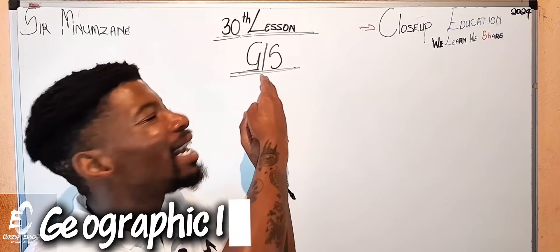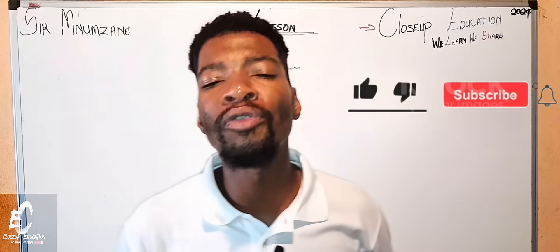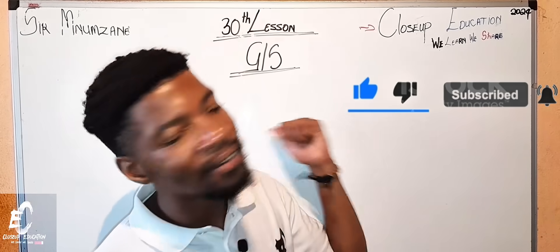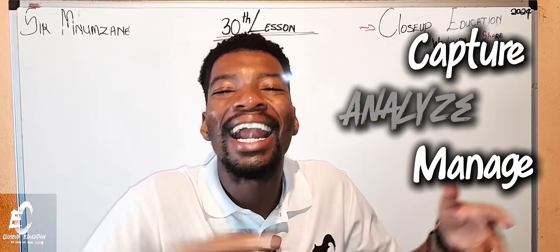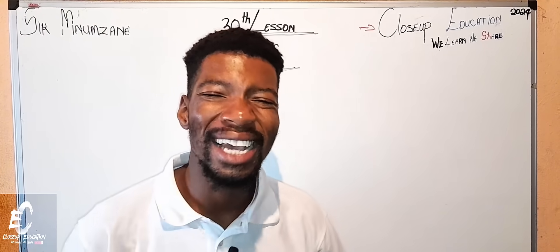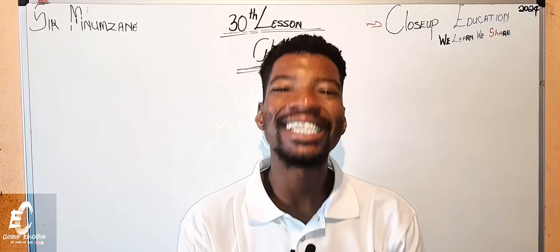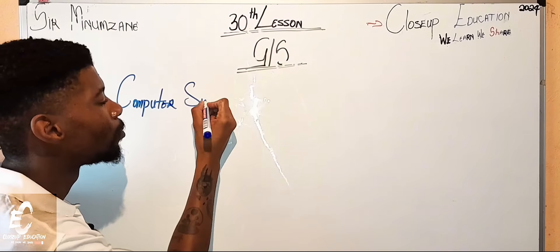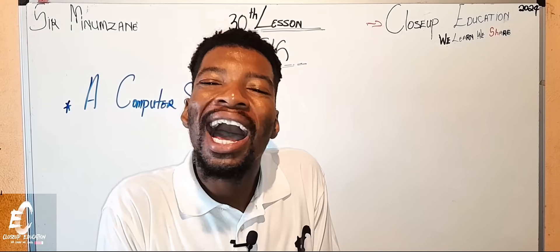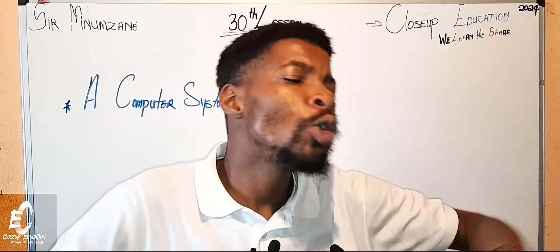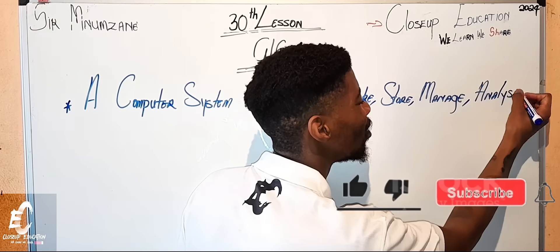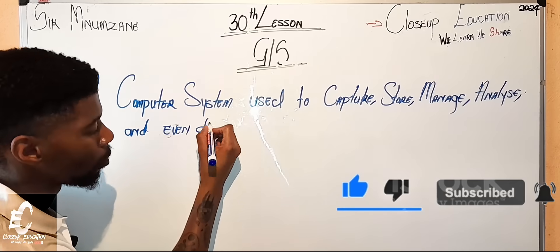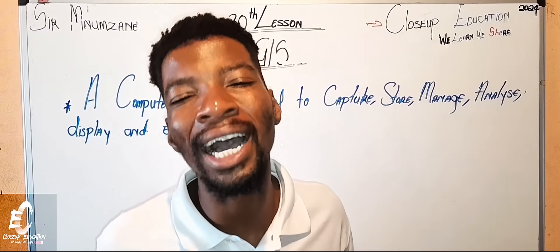GIS stands for Geographical Information System. A definition makes everything sound better, so: it is a computer system which is used to capture, manage, analyze, display, and even distribute geographical information. Let's write that down — it is a computer system used to capture, manage, store, analyze, display, and distribute information of geographical features.